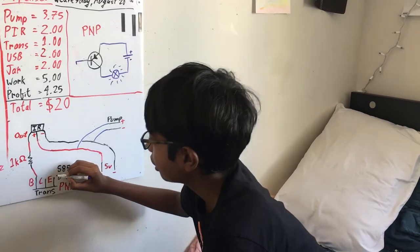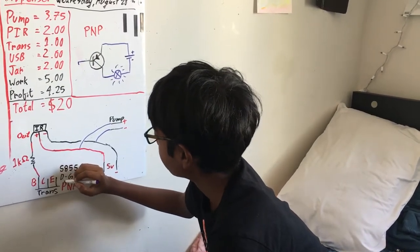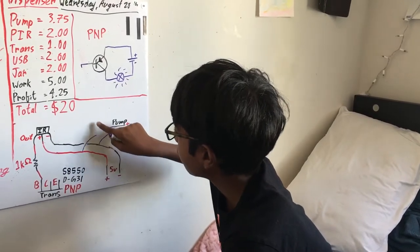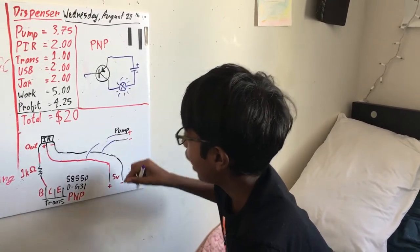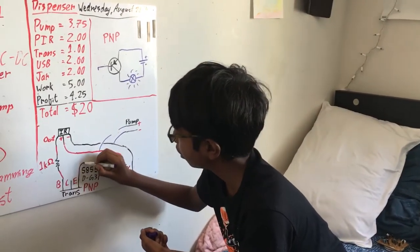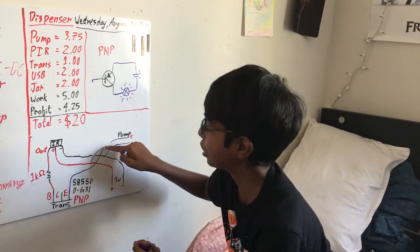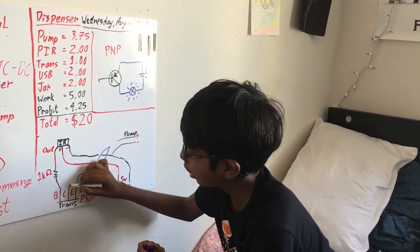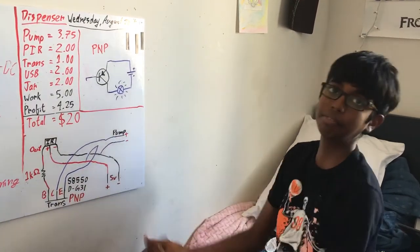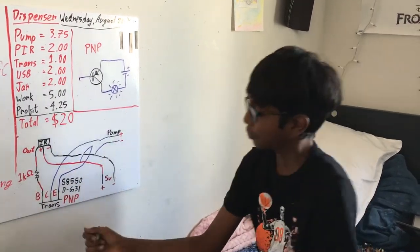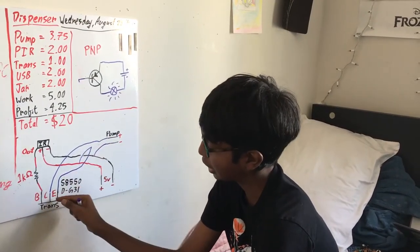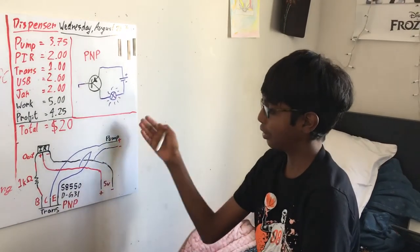So the collector is always connected to the positive, so here I'm going to make a small cut and instead of putting a switch I put the transistor. So the emitter is always connected to the positive and the collector is connected to the negative. So our circuit is done. When we supply a voltage to the base, it connects the circuit using the emitter and collector and runs the pump.